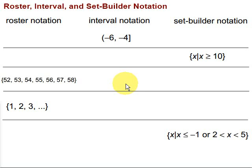In this video we're going to take a look at three different ways that we can write sets of numbers, namely roster, interval, and set builder notations. Let's take a look at each of the types of notations first, and then we'll do some conversions and see what types of sets we can write in each notation.